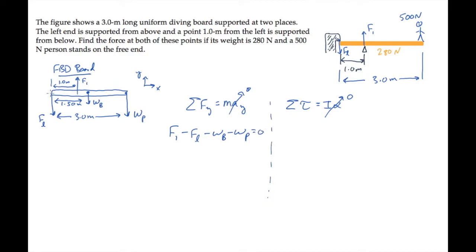First we choose a point to sum torques about, and I'll choose the left end, letting torques out of the screen be positive. The force, FL, exerts no torque about the left end, because it has no moment arm.